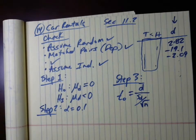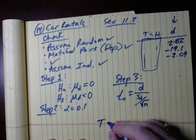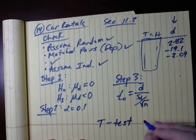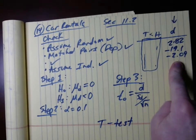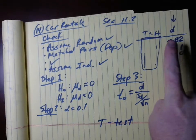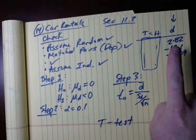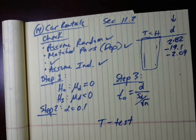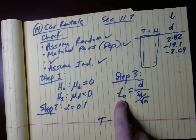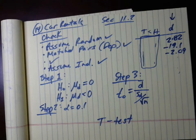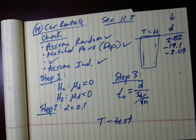Another thing you can do — as you may realize — is you can use the T test from your calculator. First you have to find the differences by hand, then you can put those differences in a list — in L1, for example — and do the T test. You can figure out all your information: your test statistic, your p-value, the main information you really need. Let me know if you have any questions. That's it.